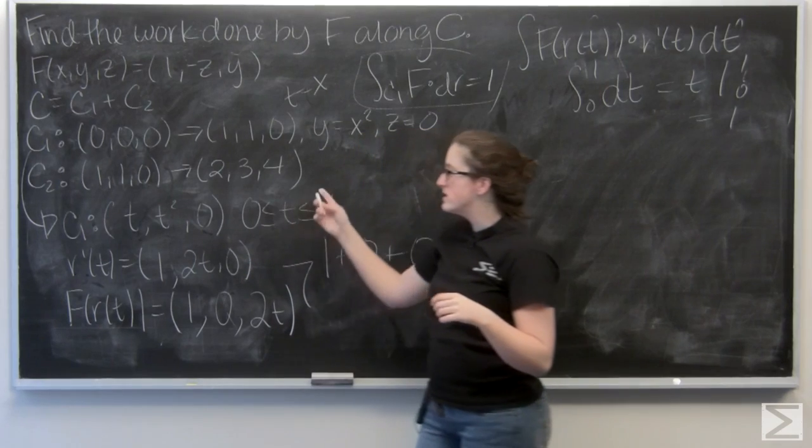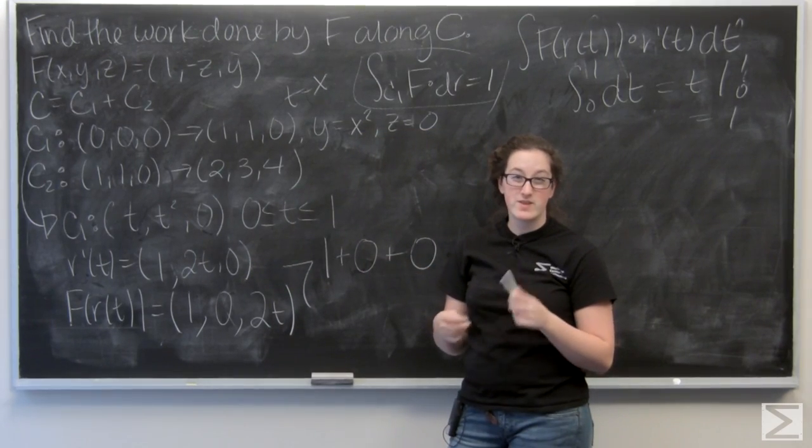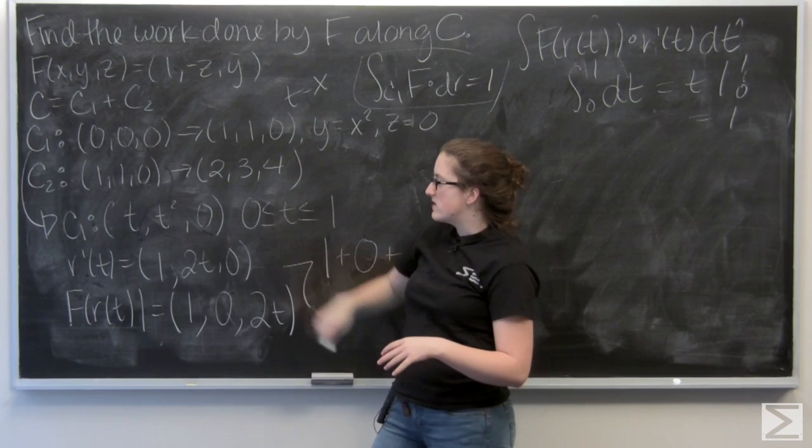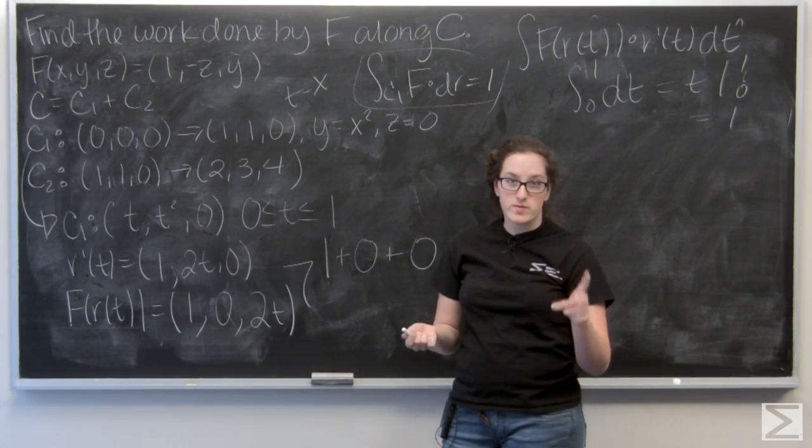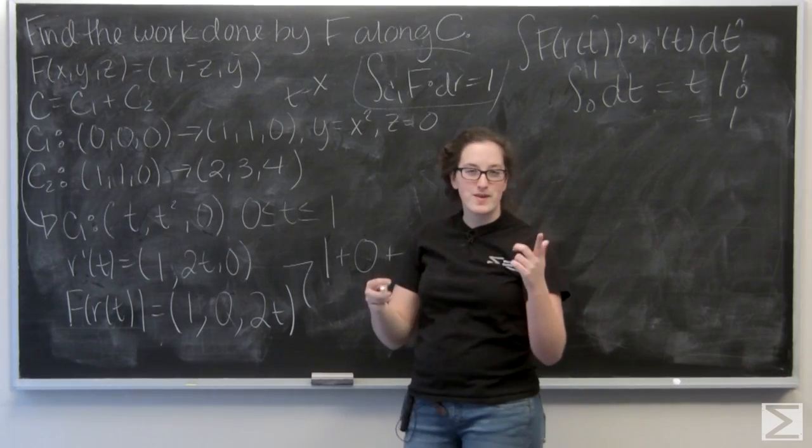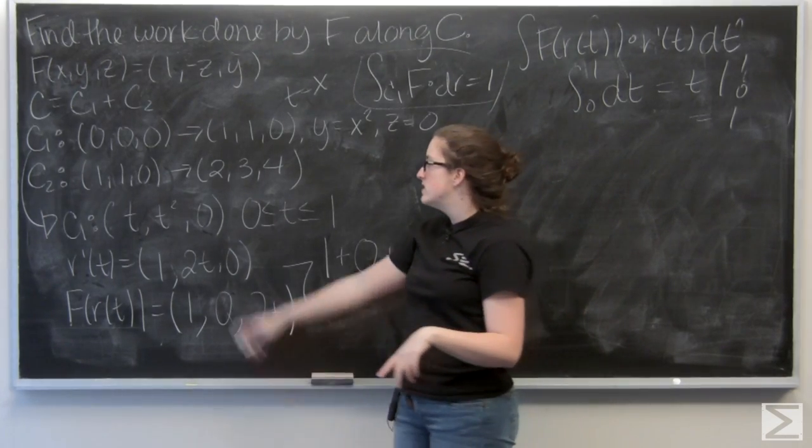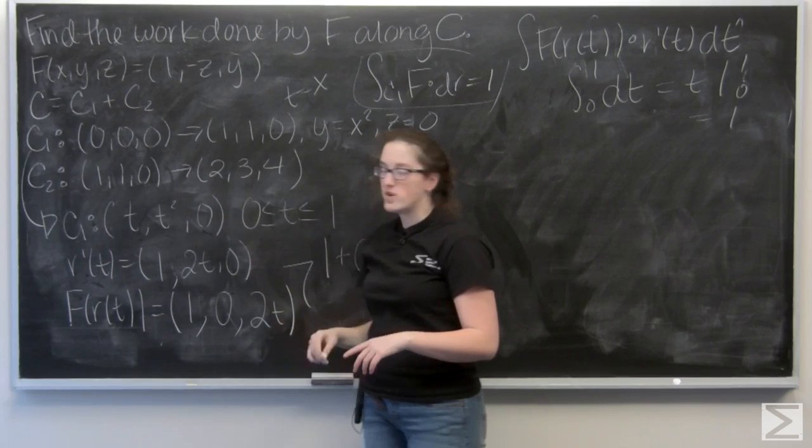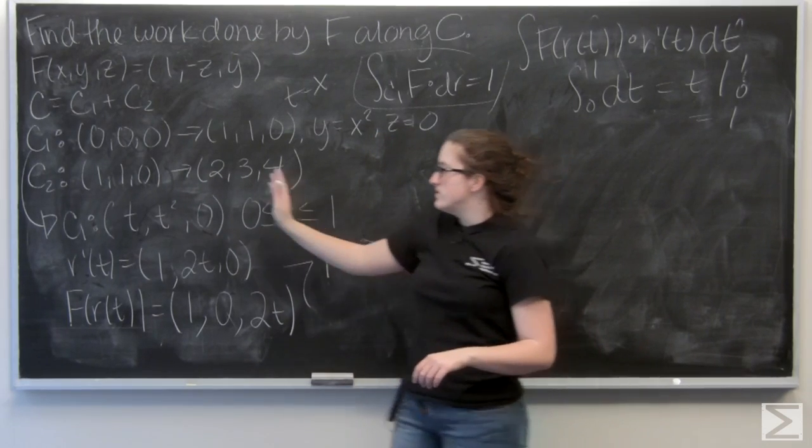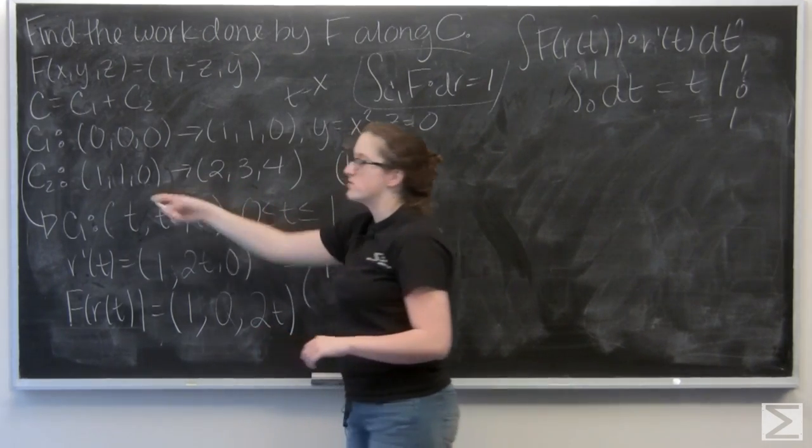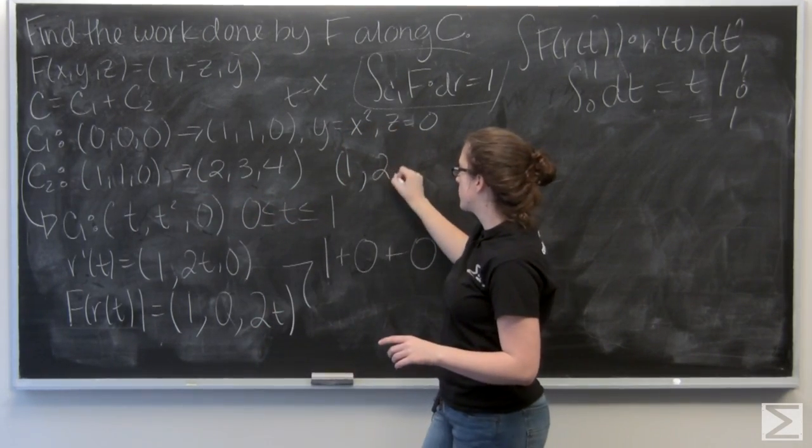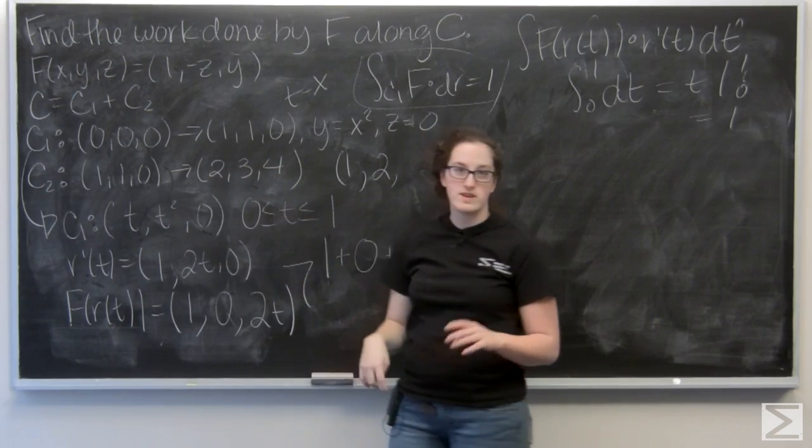So, c2 is actually going to be a little bit easier to parameterize, since I don't really have to worry about a squared term or anything. So, let's start by subtracting the start point from the end point. So, I have (2,3,4) minus (1,1,0). Well, 2 minus 1 is 1. 3 minus 1 is 2. And 4 minus 0 is 4.